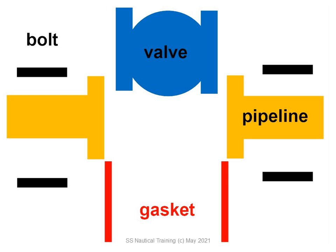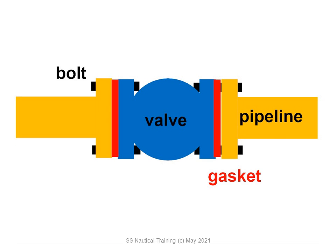Flanges are connected with the correct size bolts, nuts, and washers in all of the flange holes. The gaskets used in the pipeline must be appropriate for the size of pipeline, and also for the products and rates of transfer. The bolts are tensioned as prescribed by design and service of the pipeline.